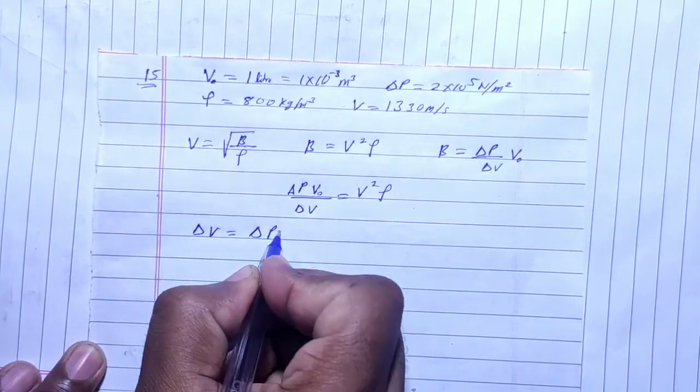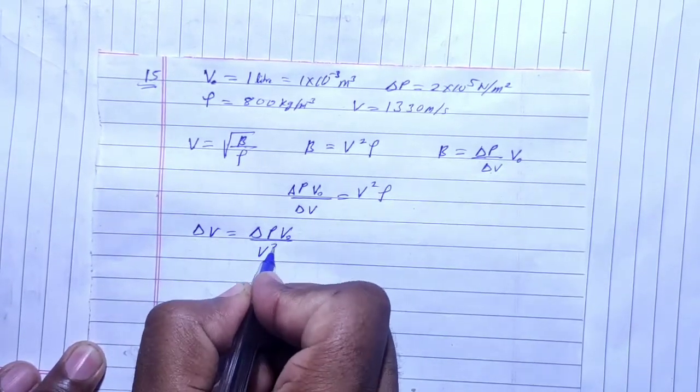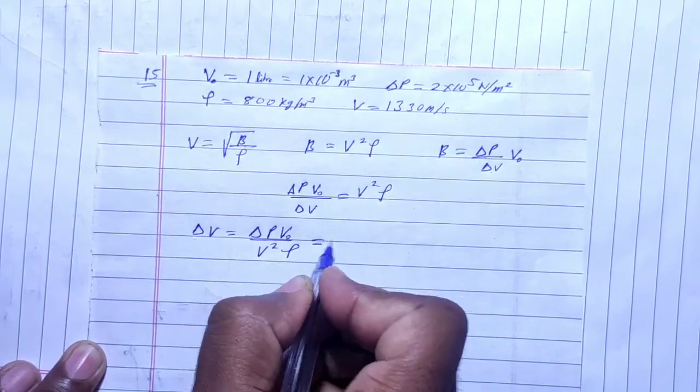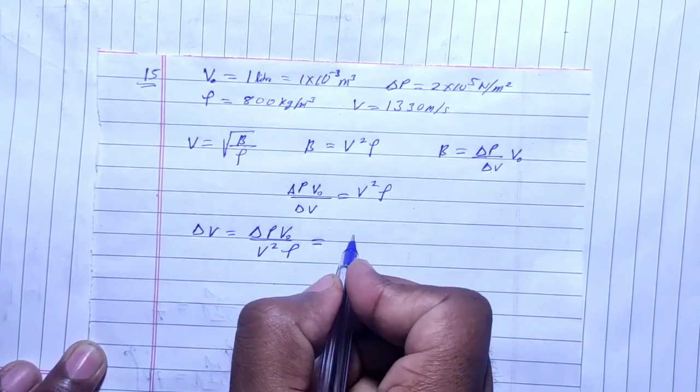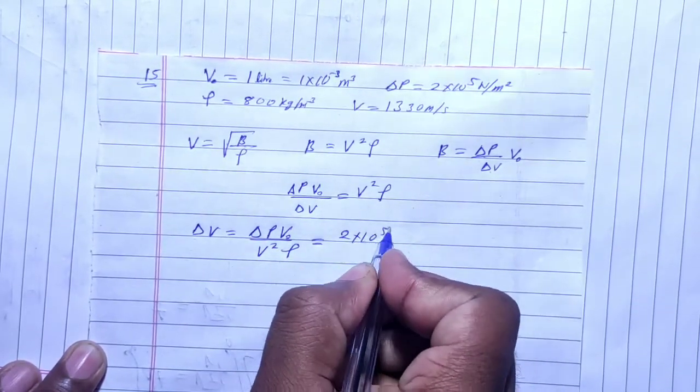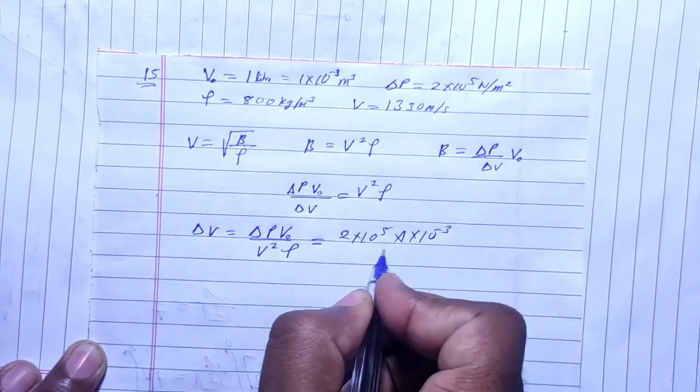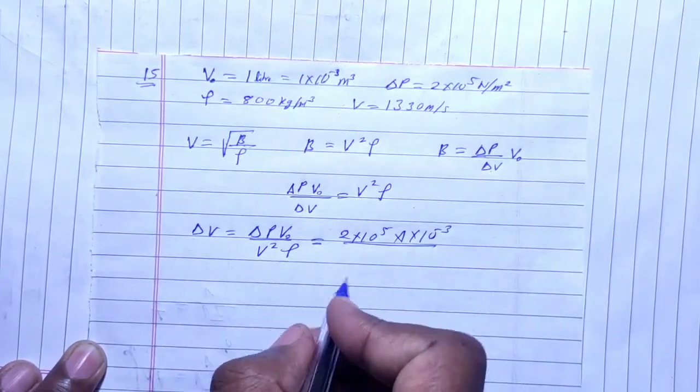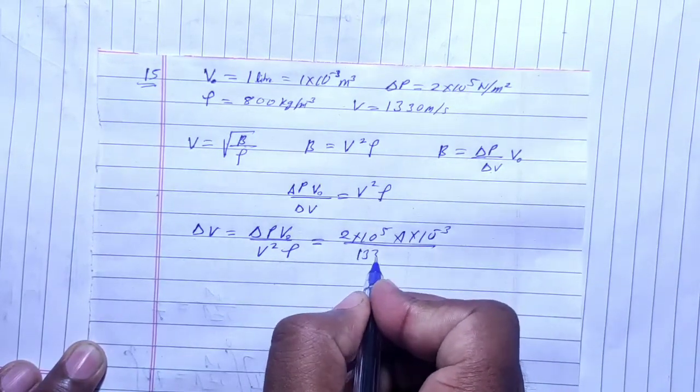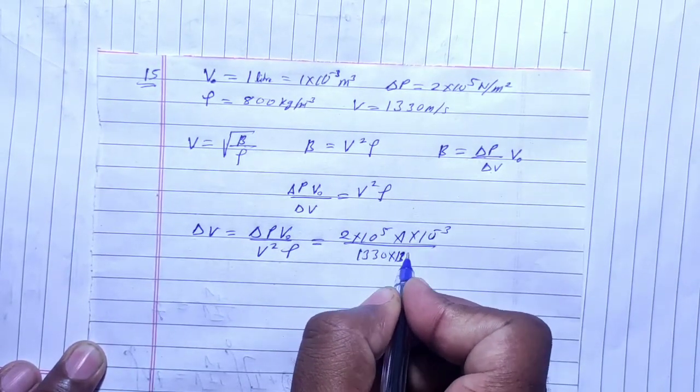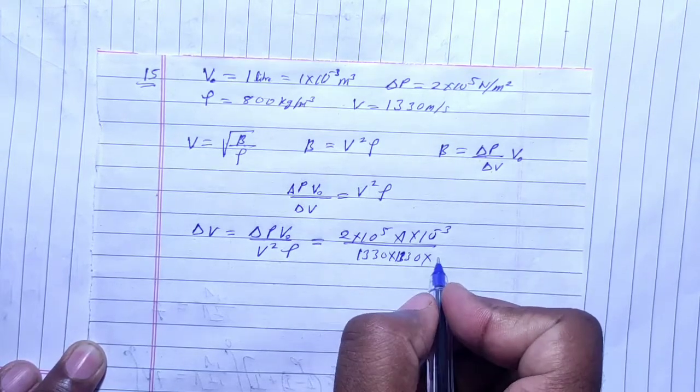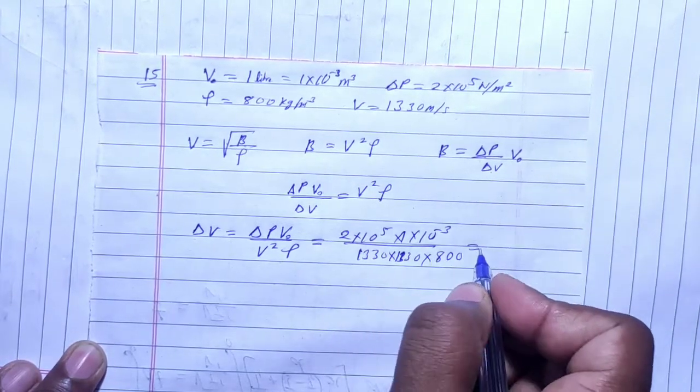Now let's put the values. Change in pressure is 2.0×10^5 N/m². Volume given is 1 liter, which is 1.0×10^-3 m³. Velocity is 1330 m/s, and density is 800 kg/m³. If we solve it...